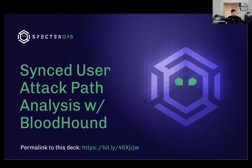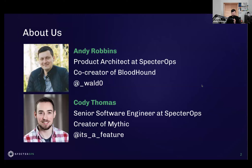We'll go ahead and get started. We're going to be talking about a new feature in BloodHound — both BloodHound Enterprise and BloodHound Community Edition — having to do with how we map the relationships that emerge when user synchronization has been set up. My name is Andy Robbins, I'm a product architect at Specter Ops and one of the original co-creators of BloodHound, which we initially released back in 2016. You can find me on Twitter at underscore Waldo with a zero.